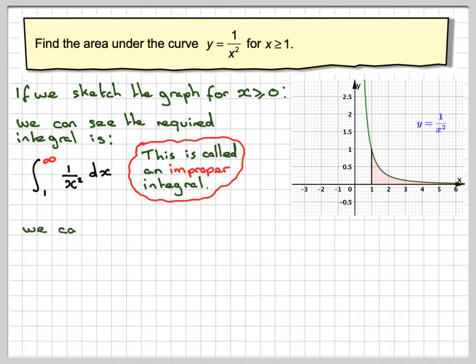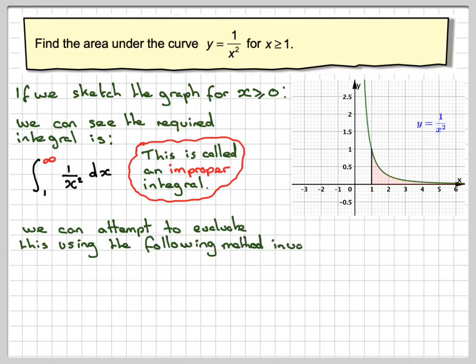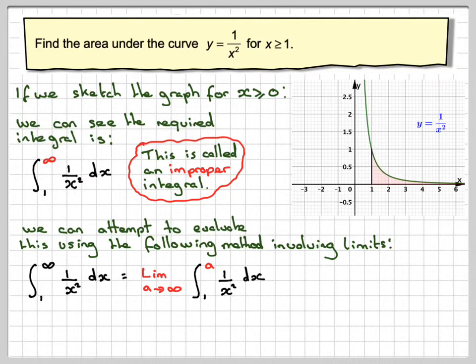Now we can attempt to evaluate it using the following method which involves limits. What we say is that the integral from 1 to infinity of 1 over x squared is equal to the limit. We introduce some new variable a, and a goes to infinity. So this upper limit will now be replaced with a. It becomes the integral from 1 to a of the function 1 over x squared dx.